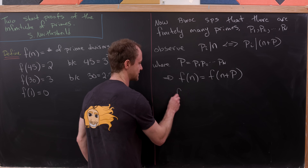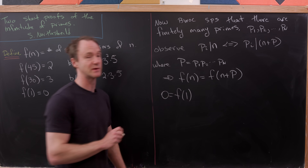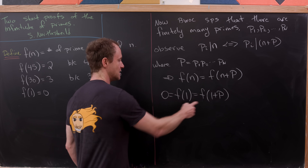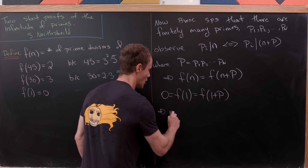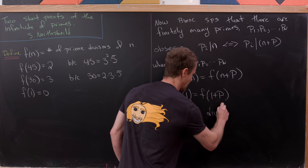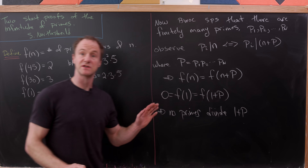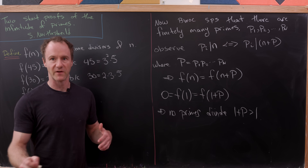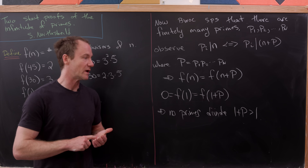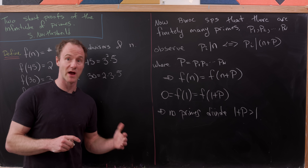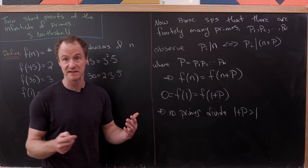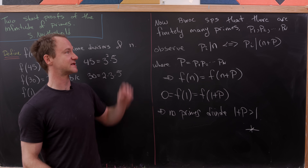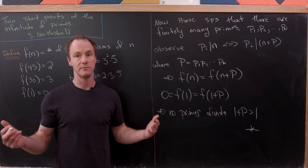Now we're essentially done. We know f(1) = 0, so f(1 + P) = 0 as well. That means no prime divides 1 + P. But 1 + P is strictly greater than 1, and by the Fundamental Theorem of Arithmetic, it must be expressible as a product of primes. This is a contradiction — so our assumption of finitely many primes fails.